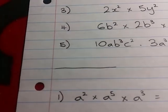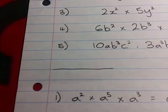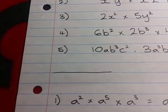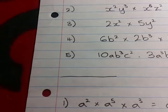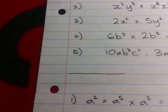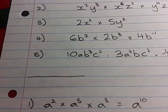The first one, a to the 2 times a to the 5 times a to the 3. They all have the same base, so you can apply the multiplication law of exponents, add them all up. 2 plus 5 plus 3, giving you a final answer of a to the 10.